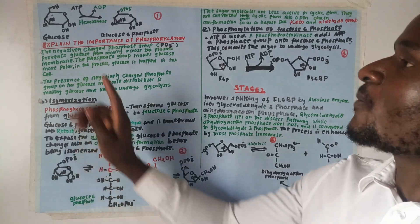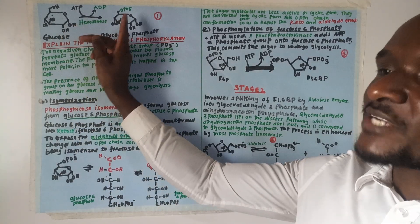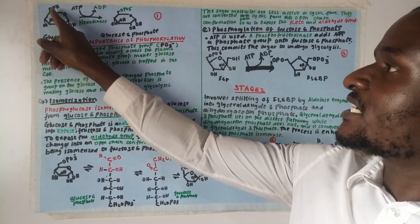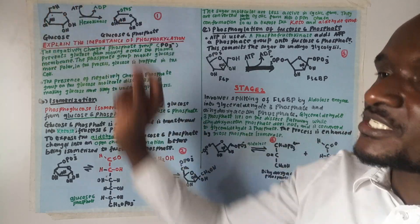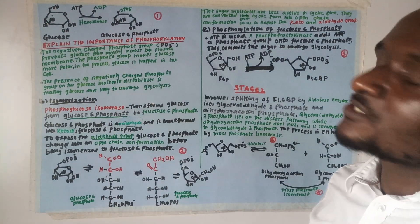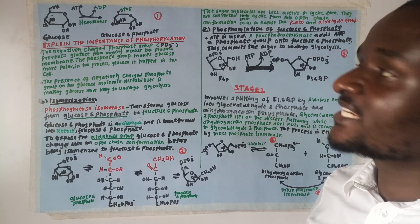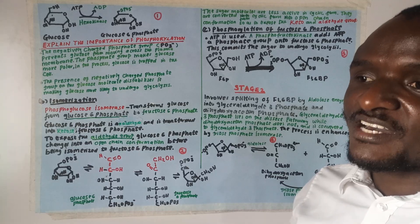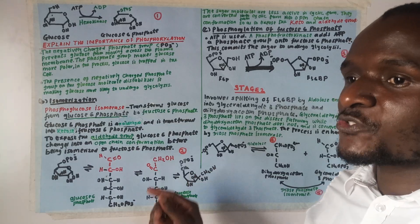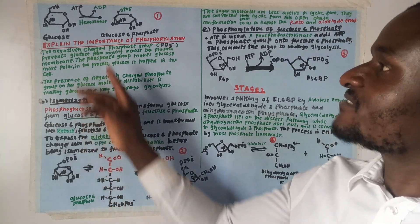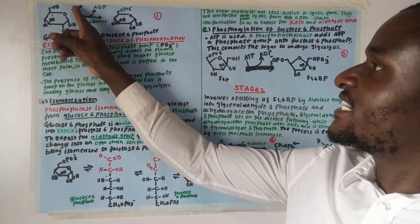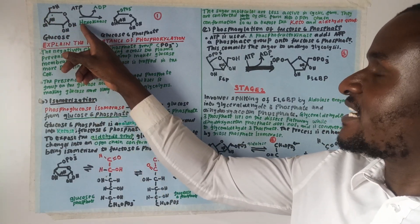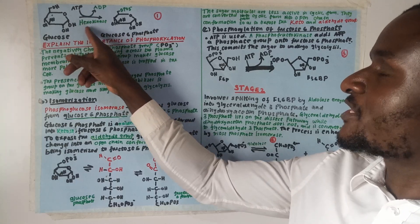Step number one: a hexokinase enzyme transfers a phosphate group from adenine triphosphate (ATP) onto glucose at carbon number six, to form glucose-6-phosphate, so ATP becomes adenine diphosphate (ADP). The role of hexokinase is to transfer a phosphate group from one molecule onto another. The name hexokinase — 'hexo' — because it is working on a six-carbon sugar molecule.